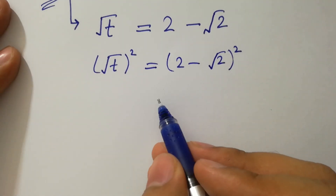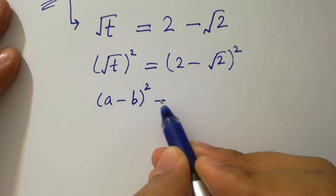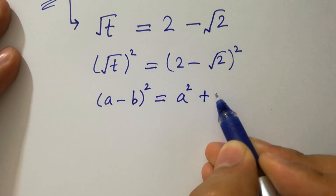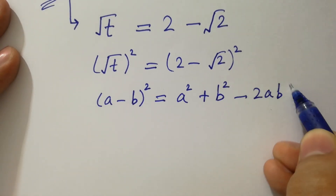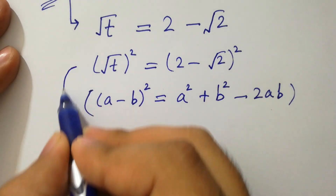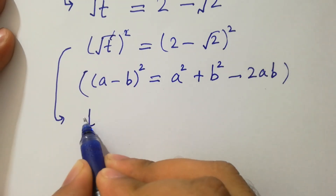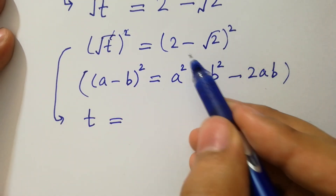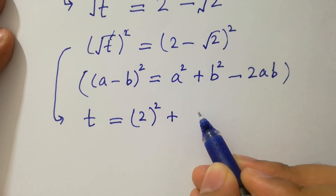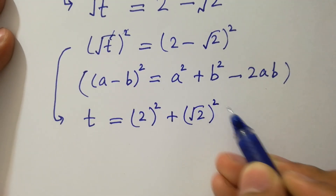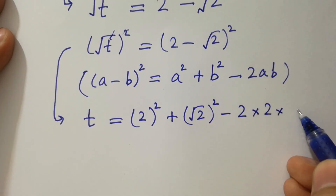By this, we know the formula of a minus b whole squared, which is equal to a squared plus b squared minus 2ab. Apply now. The squared cancels from the square root. We have t equal to, using the a minus b whole squared formula: 2 squared plus square root of 2 squared minus 2 times 2 times square root of 2.